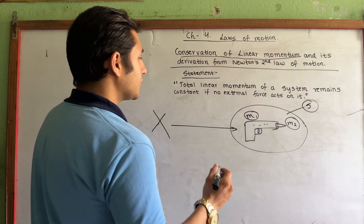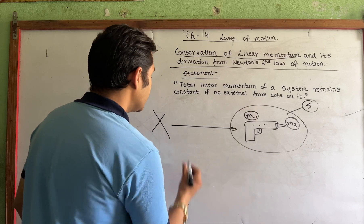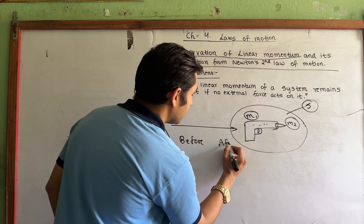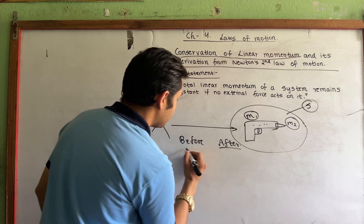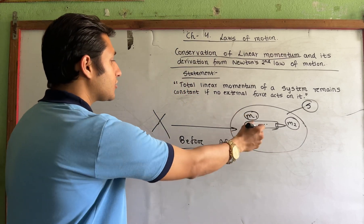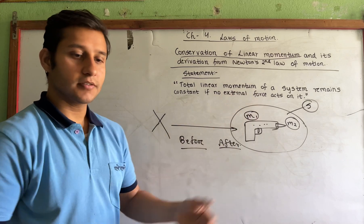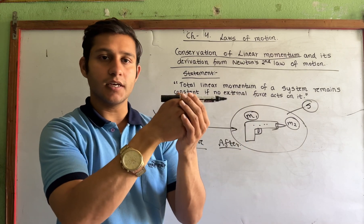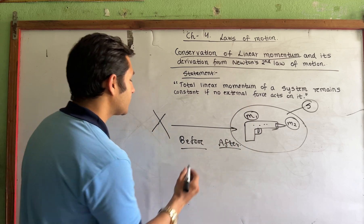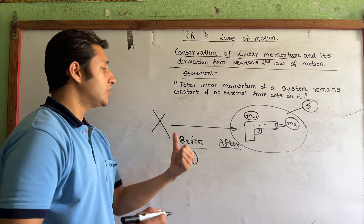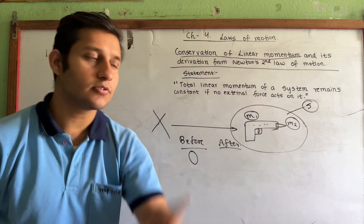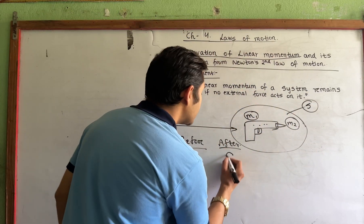Linear momentum conservation. What is this? Before and after. Before — what is this? This momentum was at the beginning. This momentum was 0. Yes, this momentum was 0. After — what is this? This is 0. So this is 0.